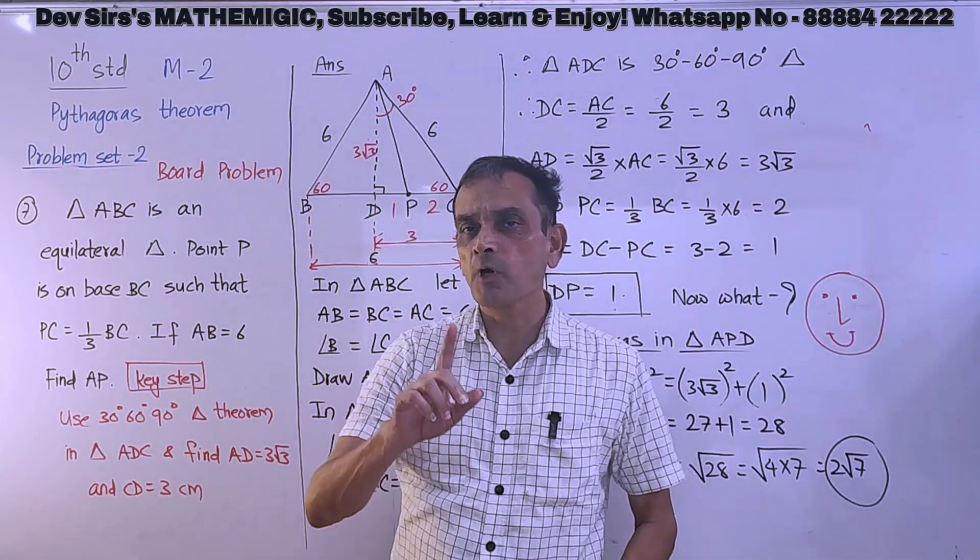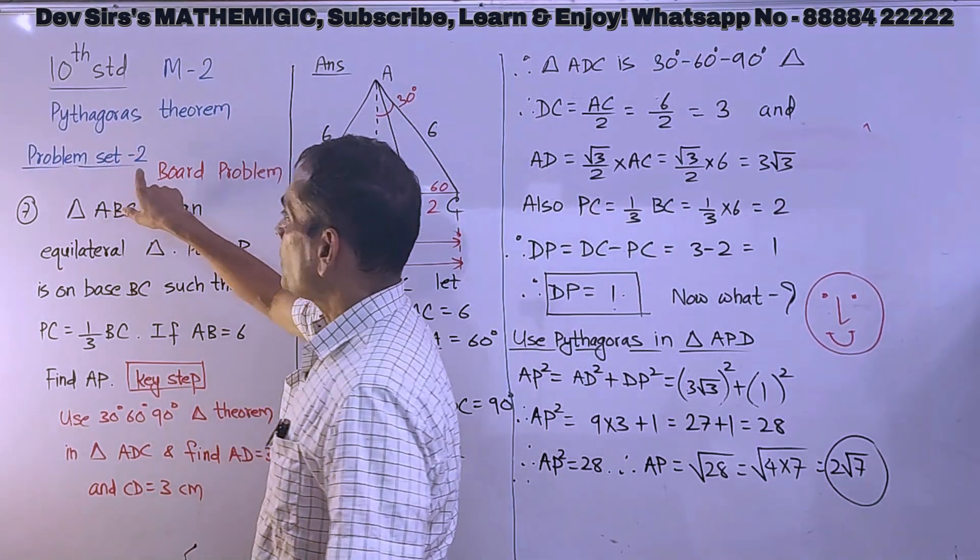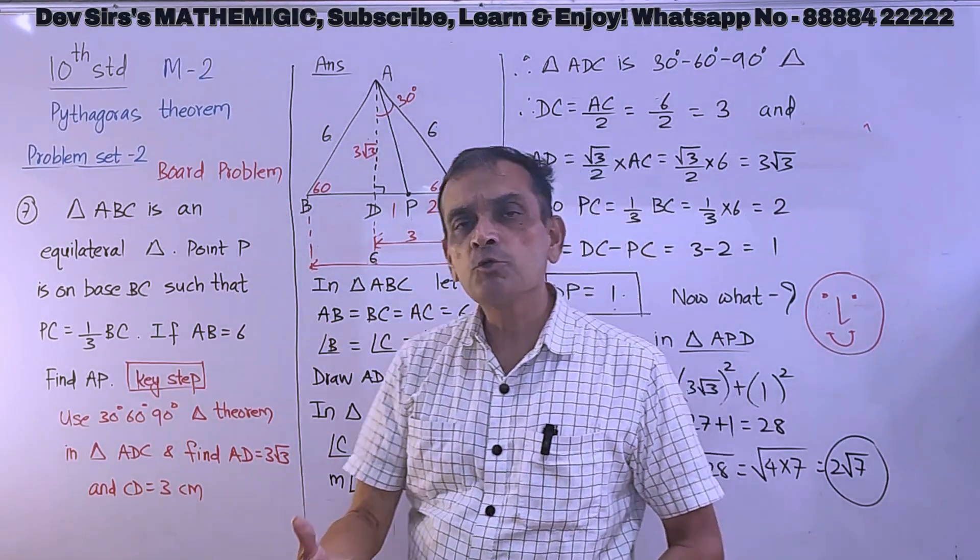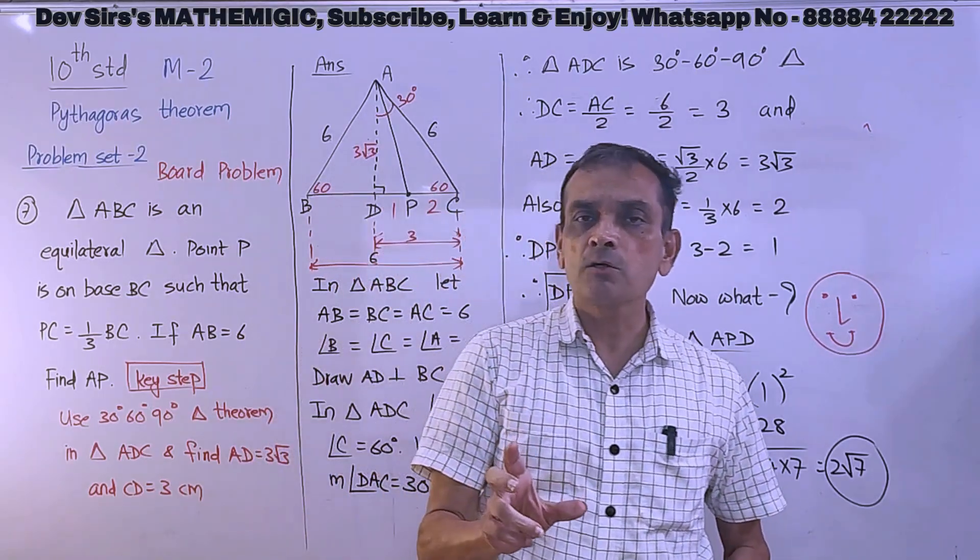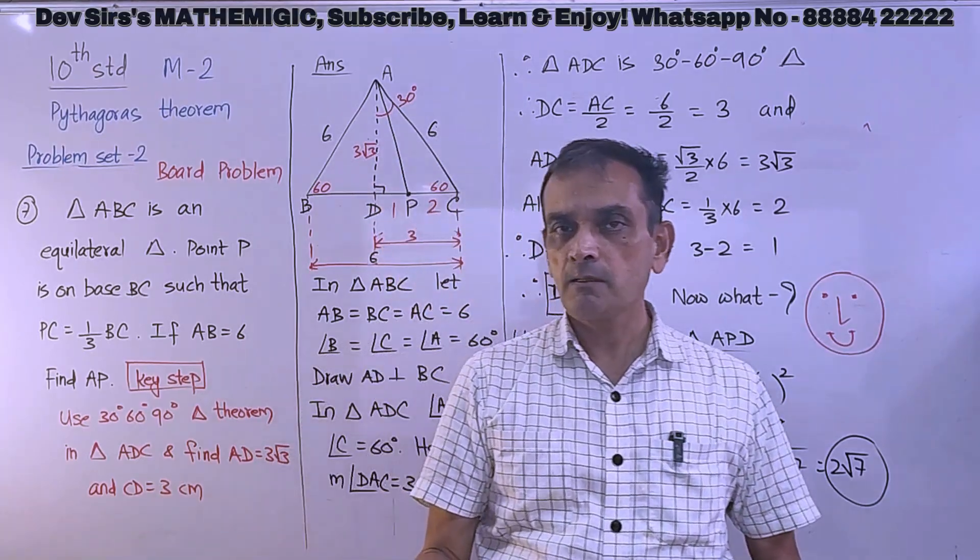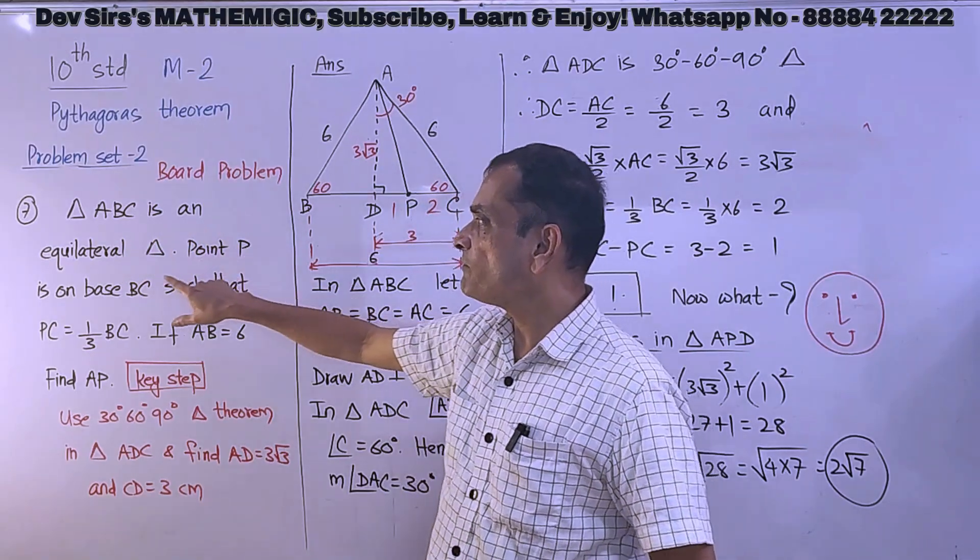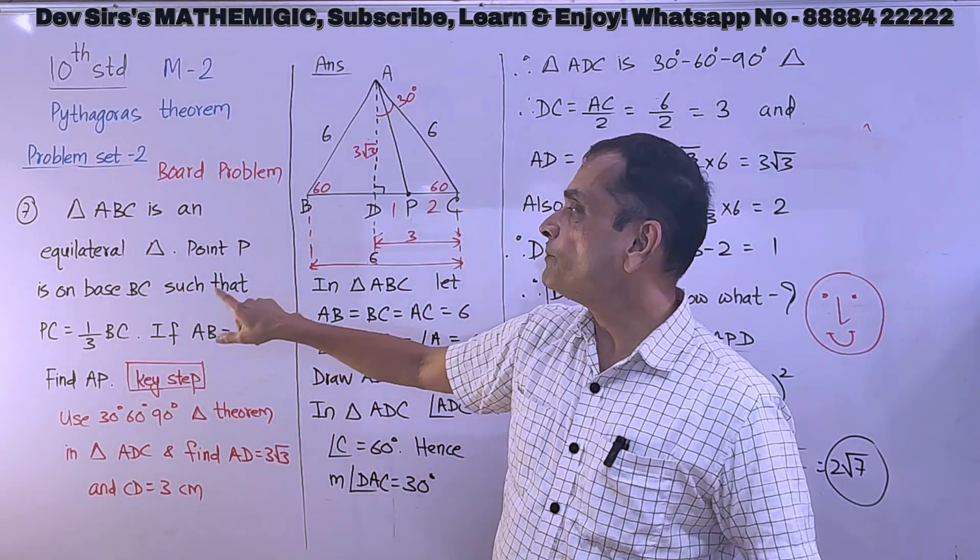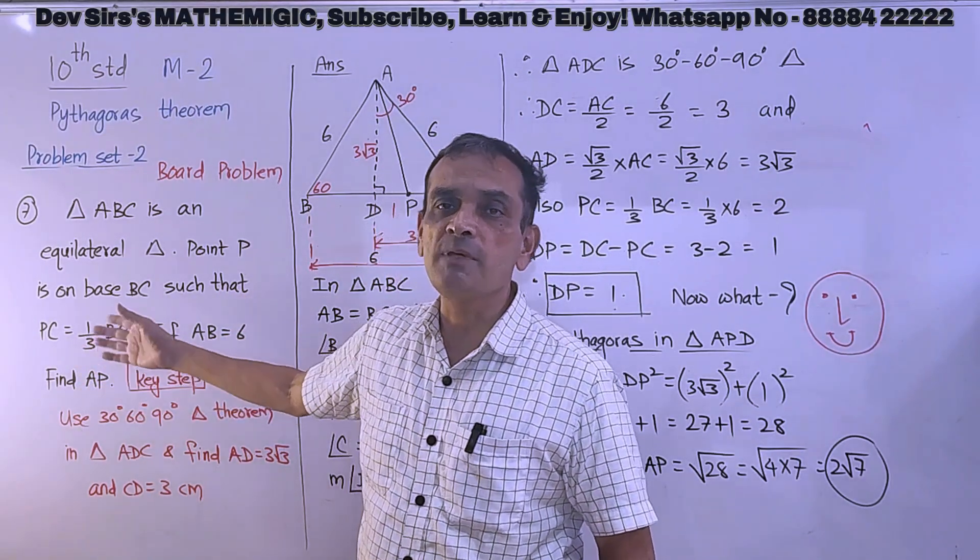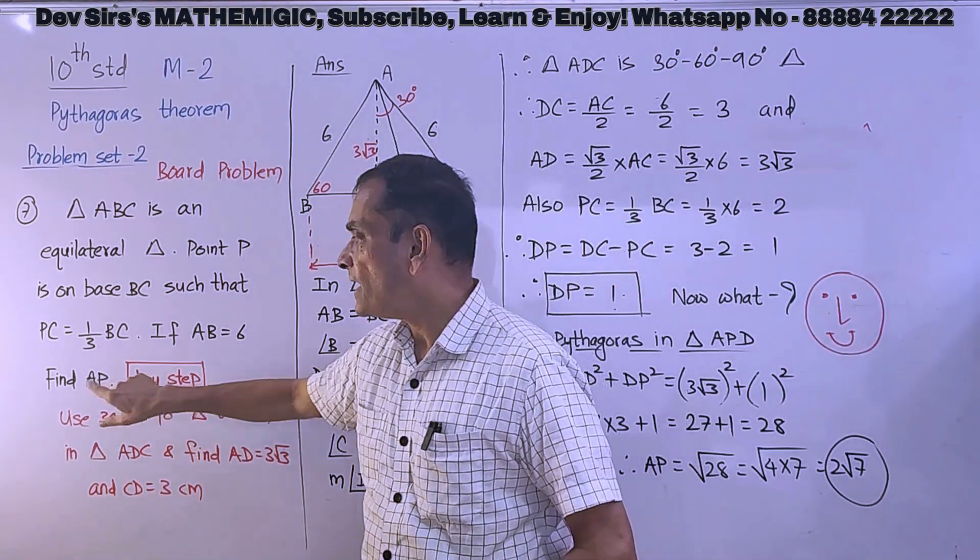Pythagoras theorem, there is one problem asked in board, an important problem - problem set 2. This problem involves Pythagoras as well as 30-60-90 triangle theorem. This is an important sum, asked 3 times. Triangle ABC is an equilateral triangle. Point P is on base BC such that PC is equal to one third BC. If AB equal to 6, find AP.